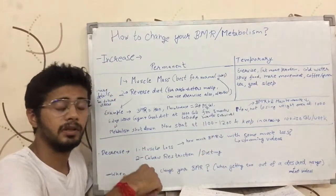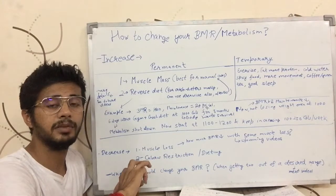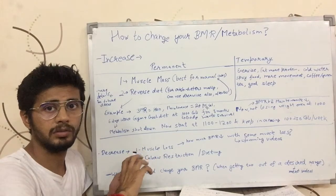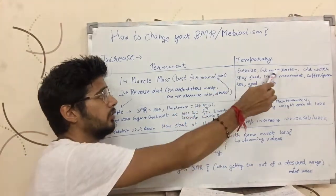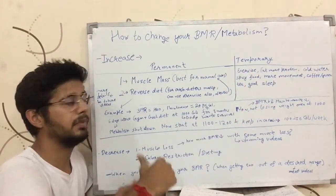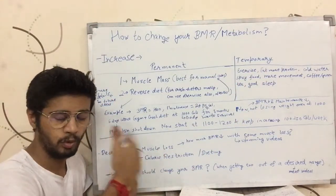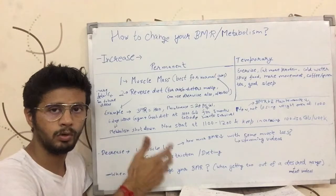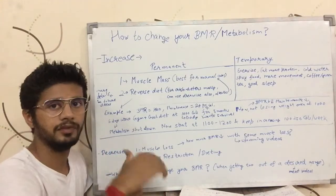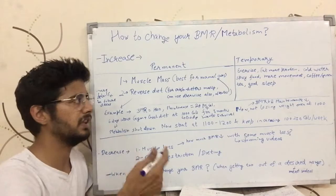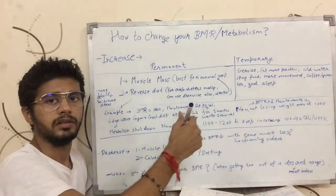Eat more protein. Protein has a higher thermic effect of food — I talked about this in my previous videos — so it would burn off more energy, but only when you are eating more protein that day. Again, that is temporary. If you don't eat more protein, your BMR comes back to what it used to be.